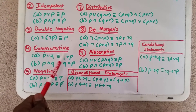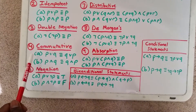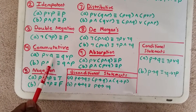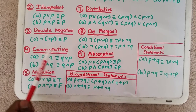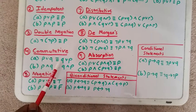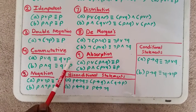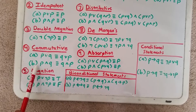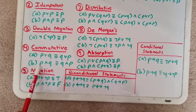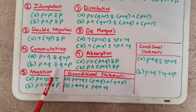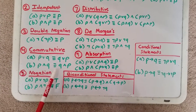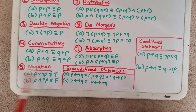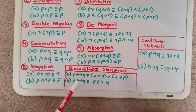Next, we have the commutative law. It states that P or Q can be switched, so it's logically equivalent to Q or P. Similarly, P and Q is logically equivalent to Q and P — you can see that they can be switched.